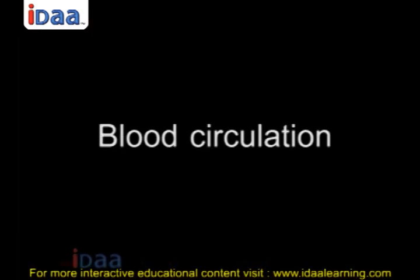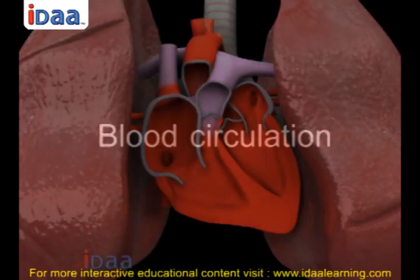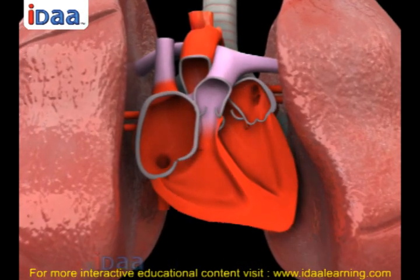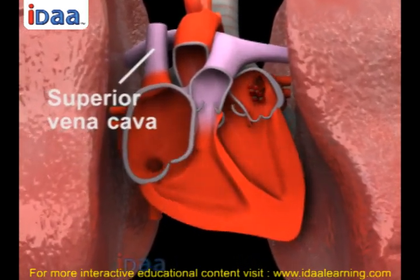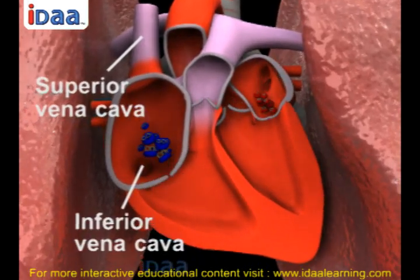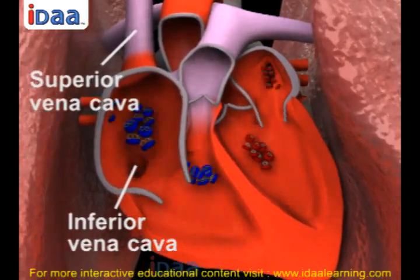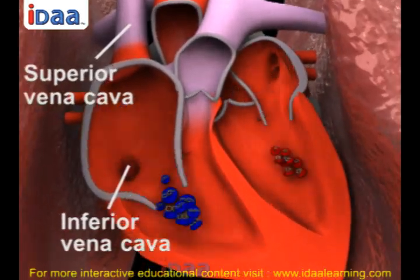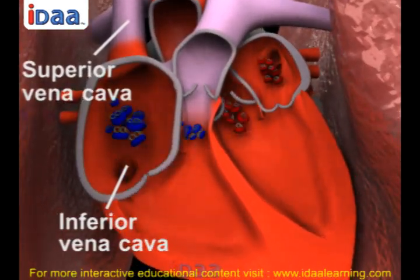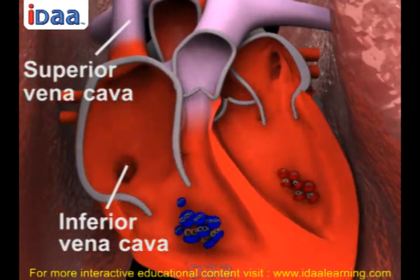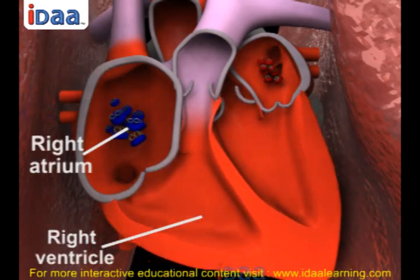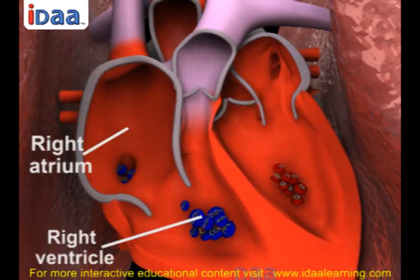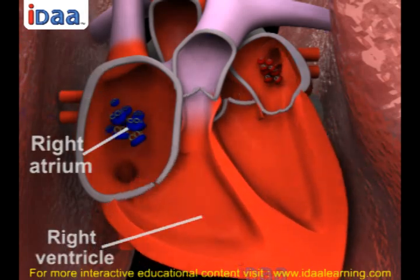Blood Circulation. Let's learn the direction of blood flow. The superior and inferior vena cava are the blood vessels which carry carbon dioxide rich blood from the different body parts to the right atrium and right ventricle.